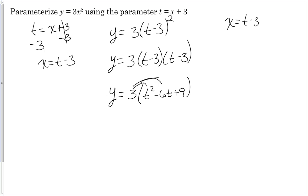Now just distribute the 3 through. So you're going to get y equals 3t squared minus 18t plus 27. And that is your parameterized equation.